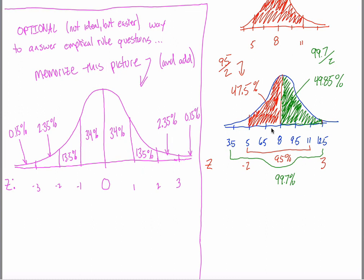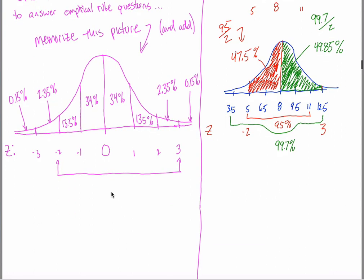Remember that super hard question — what percentage of nights do I sleep between 5 and 12 hours? We had to deduce that it was 47.5% plus 49.85%. If I asked you that question here, all you'd have to recognize is that 5 hours of sleep corresponds with negative 2 standard deviations, and 12.5 hours corresponds with positive 3 standard deviations. So your answer is just: how much area is there between here and here?